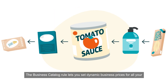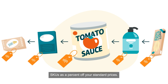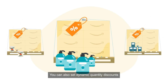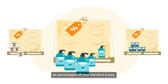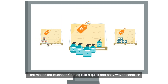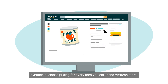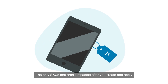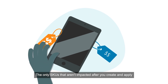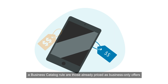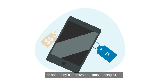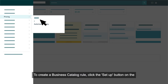The business catalog rule lets you set dynamic business prices for all your SKUs as a percent off your standard prices. You can also set dynamic quantity discounts as percentages off your standard prices, making the business catalog rule a quick and easy way to establish dynamic business pricing for every item you sell in the Amazon store. The only SKUs not impacted are those already priced as business-only offers or defined by customized business pricing rules.